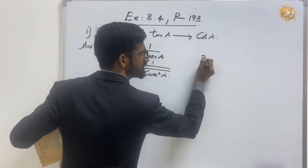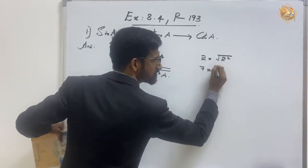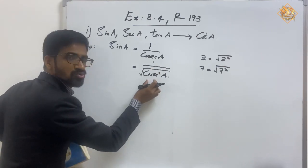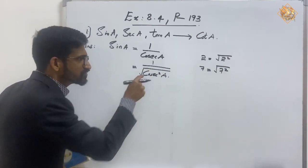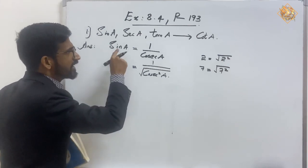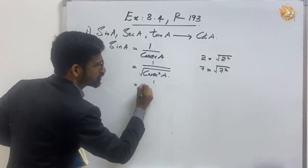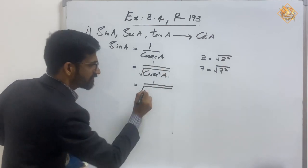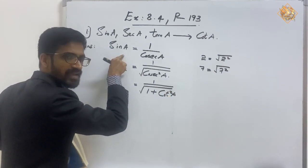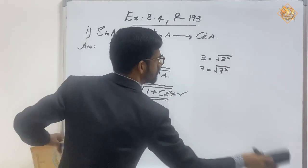We can rewrite cosec as root of cosec² A, just as we can write 2 as root of 2², or 7 as root of 7². We know the identity cosec² A = 1 + cot² A. So substituting, sin A = 1 by root of (1 + cot² A). Starting from sin A, we've reached cot A.